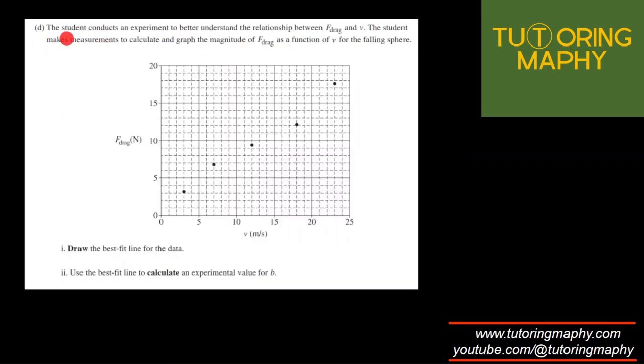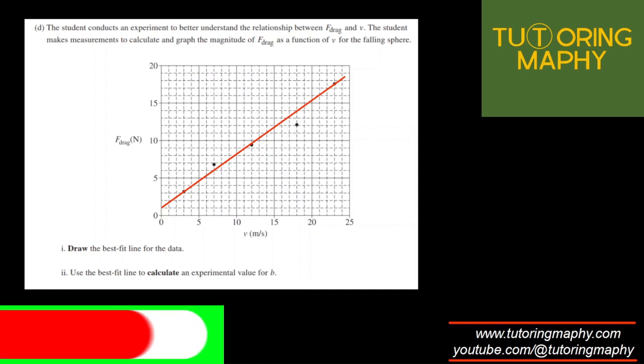The next thing talks about the student conducts an experiment to better understand the relationship between F_drag and V. The student makes measurements to calculate and graph the magnitude of F_drag as a function of V. Draw the line of best fit. So let me draw that. A line of best fit is going to look something like... this looks okay. Maybe it should pass from here. This looks a little better. So this is a line of best fit.